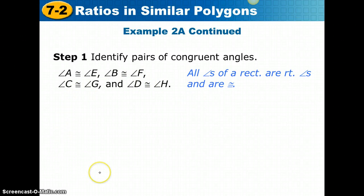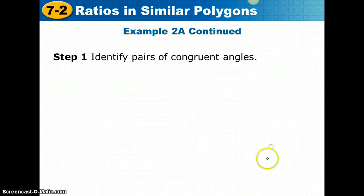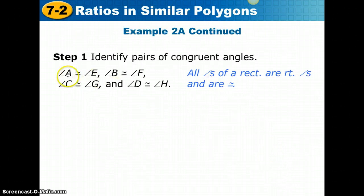Now even though all of them are right angles, the order is important. A and E are in the same position, so they are corresponding. B and F are in the same position, so they are corresponding, and so on and so forth for C, G, and D, and H. We must label this order as such.